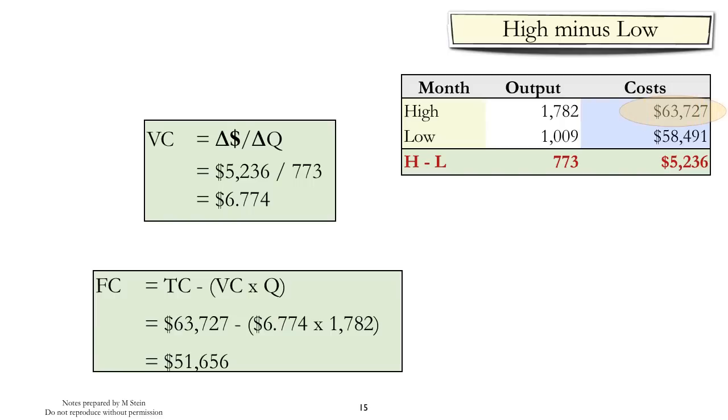So using the high, we see the total cost is $63,727. The variable cost we estimated is $6.774. The quantity is 1,782. When we substitute all of that in, we end up with an estimate of the fixed cost of $51,656.